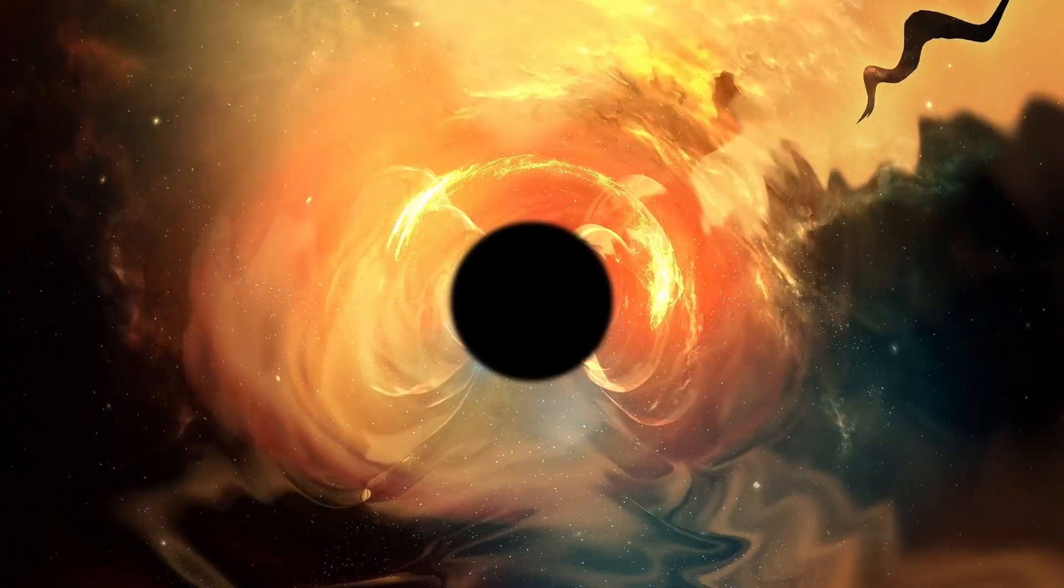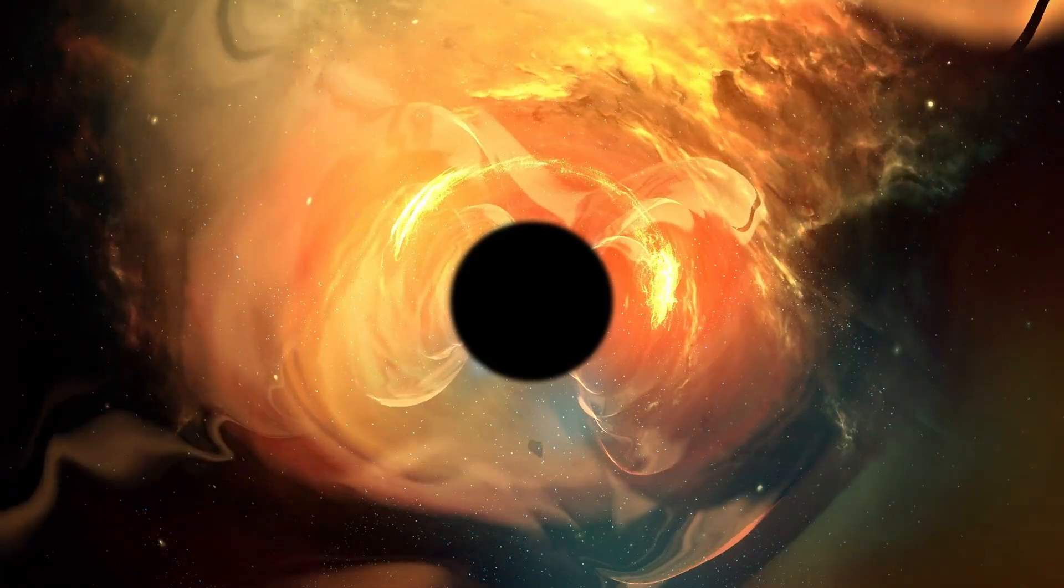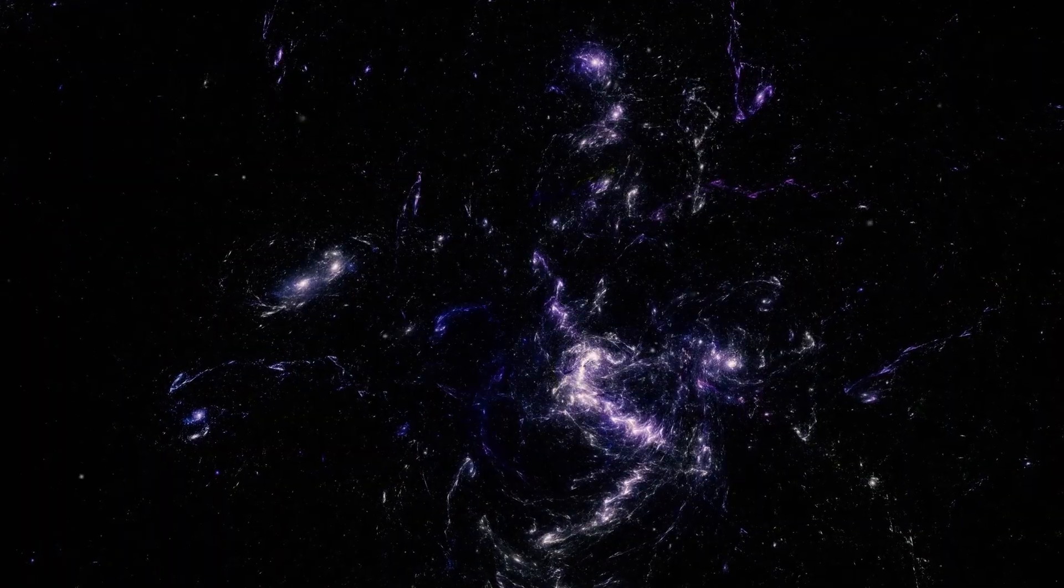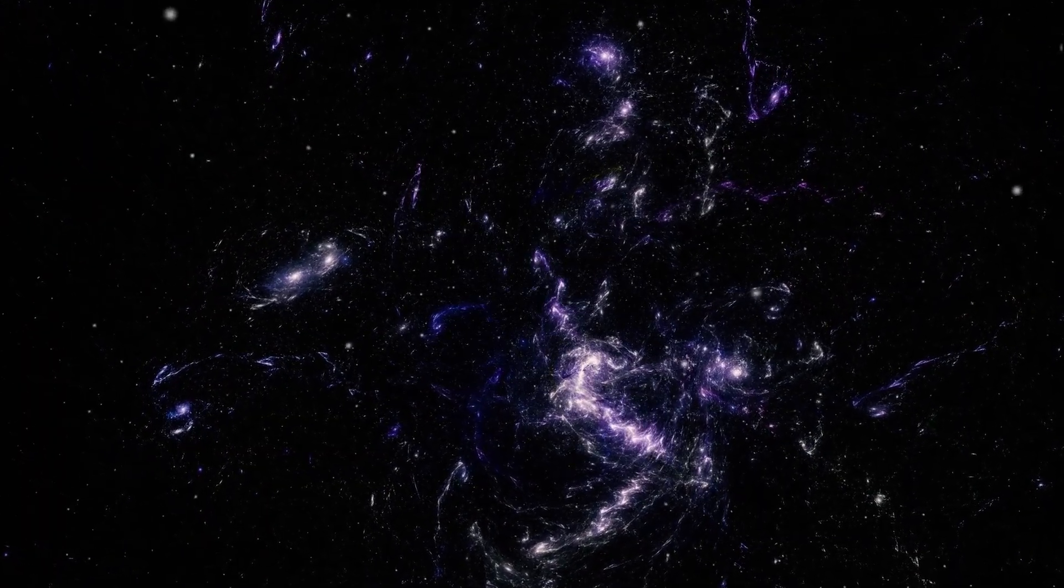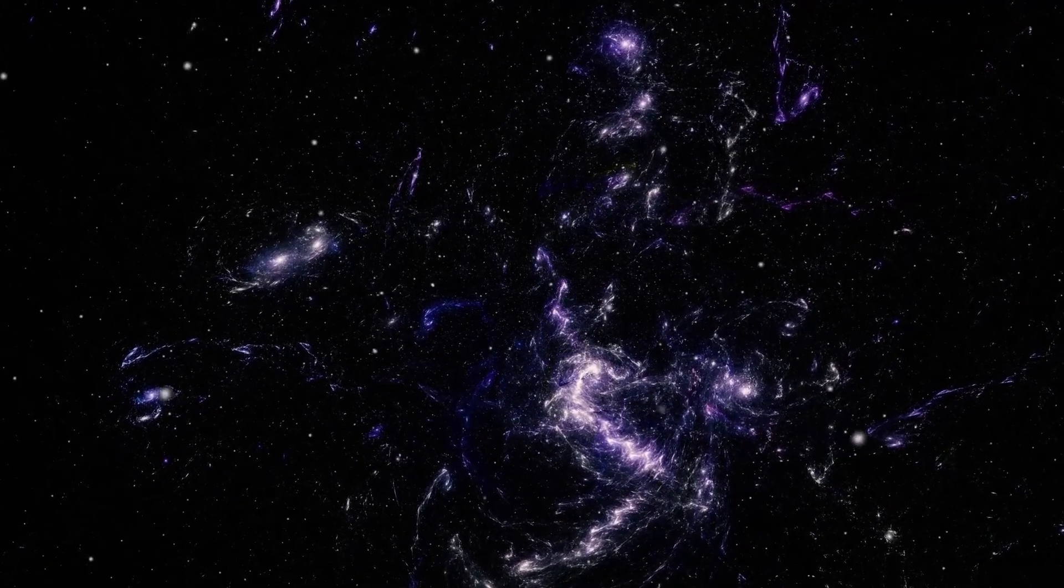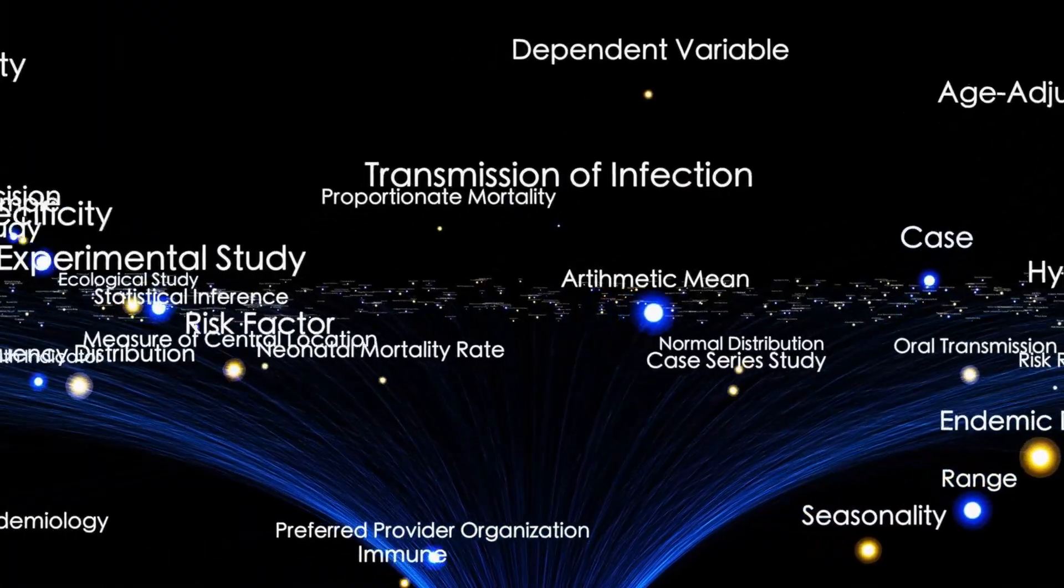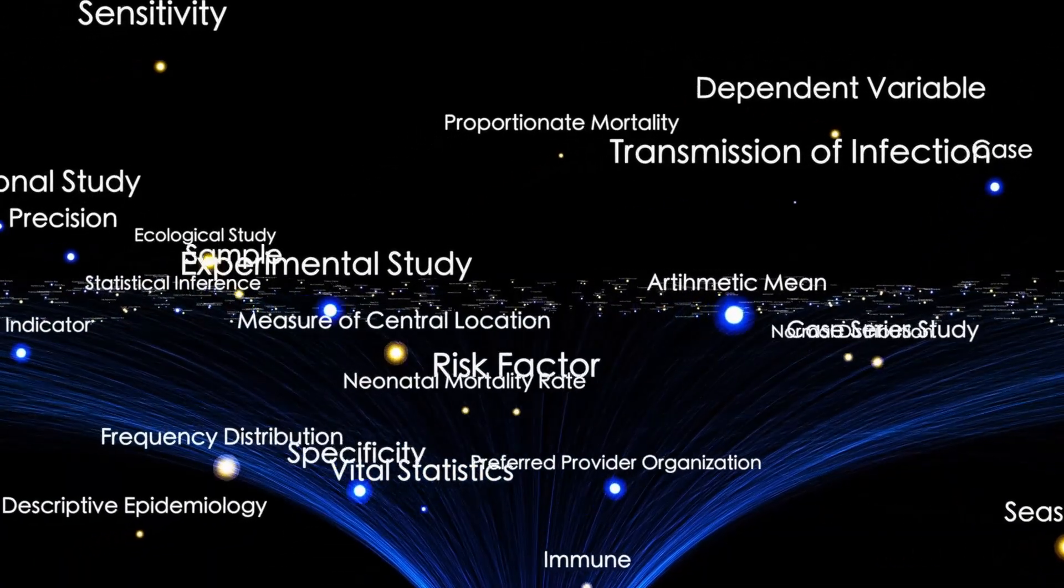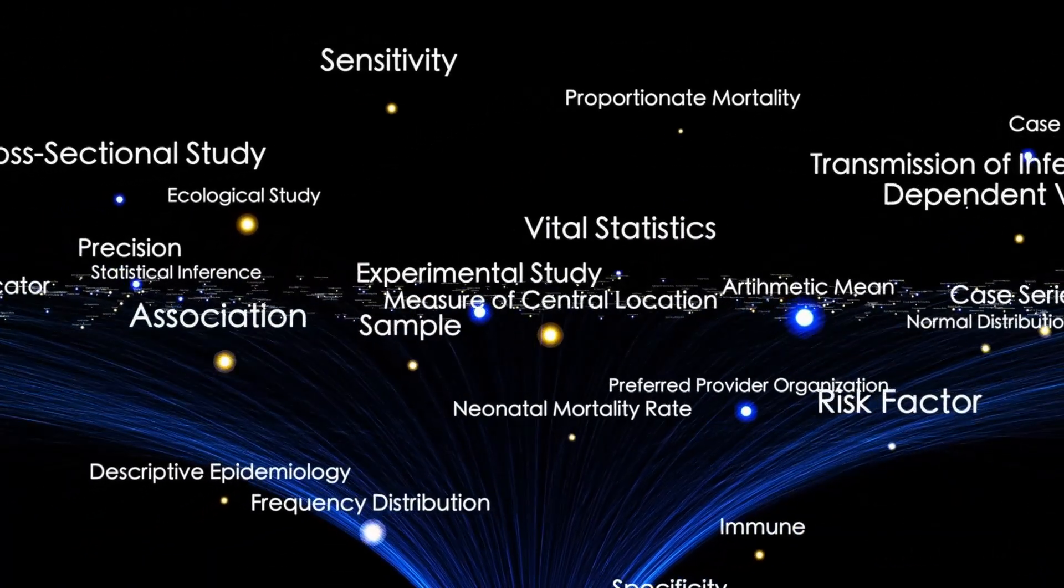Now, as 3i Atlas moves behind the sun, it becomes invisible from every telescope on Earth. The only clues we have are indirect: fluctuations in solar radiation, anomalies in cosmic ray data, and whispers of magnetic change rippling across the heliosphere. It's as though something is happening on the far side of the sun that we cannot see, only feel.